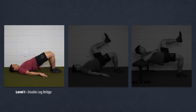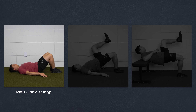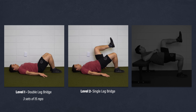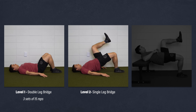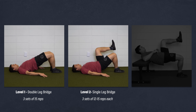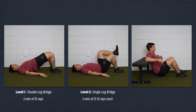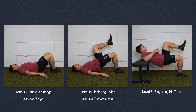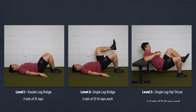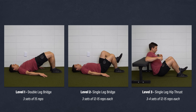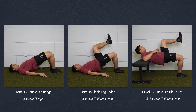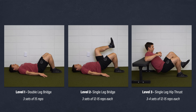Level 1 — Double Leg Bridge: Lie on your back, bridge up, squeeze your glutes, lower yourself down, and repeat. Aim for three sets of 15 reps. Level 2 — Single Leg Bridge: Aim for three sets of 12 to 15 reps. Level 3 — Single Leg Hip Thrust: Aim for three to four sets of 12 to 15 slow, controlled reps. Add weight as needed.